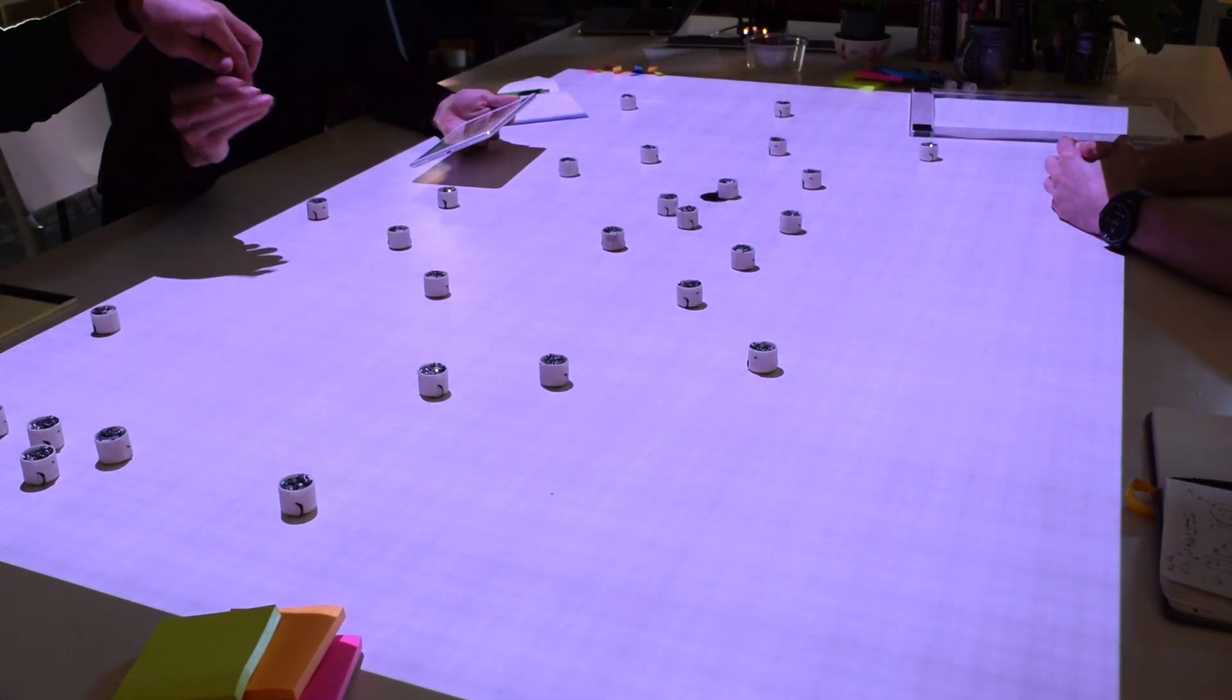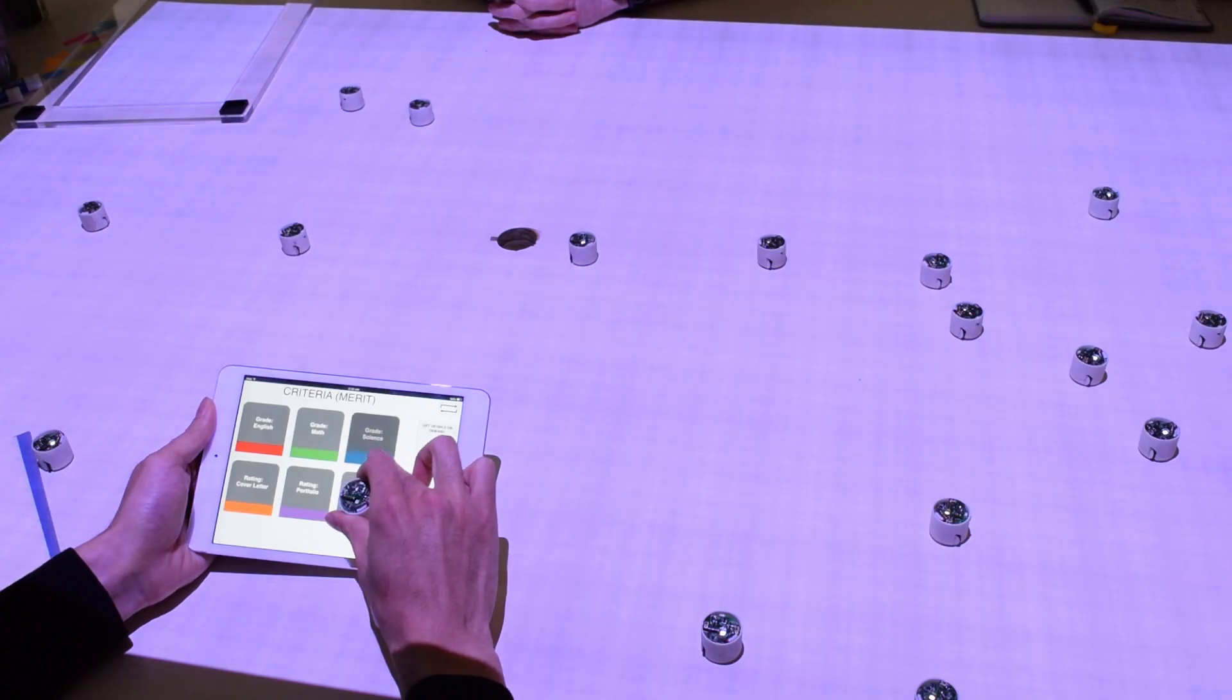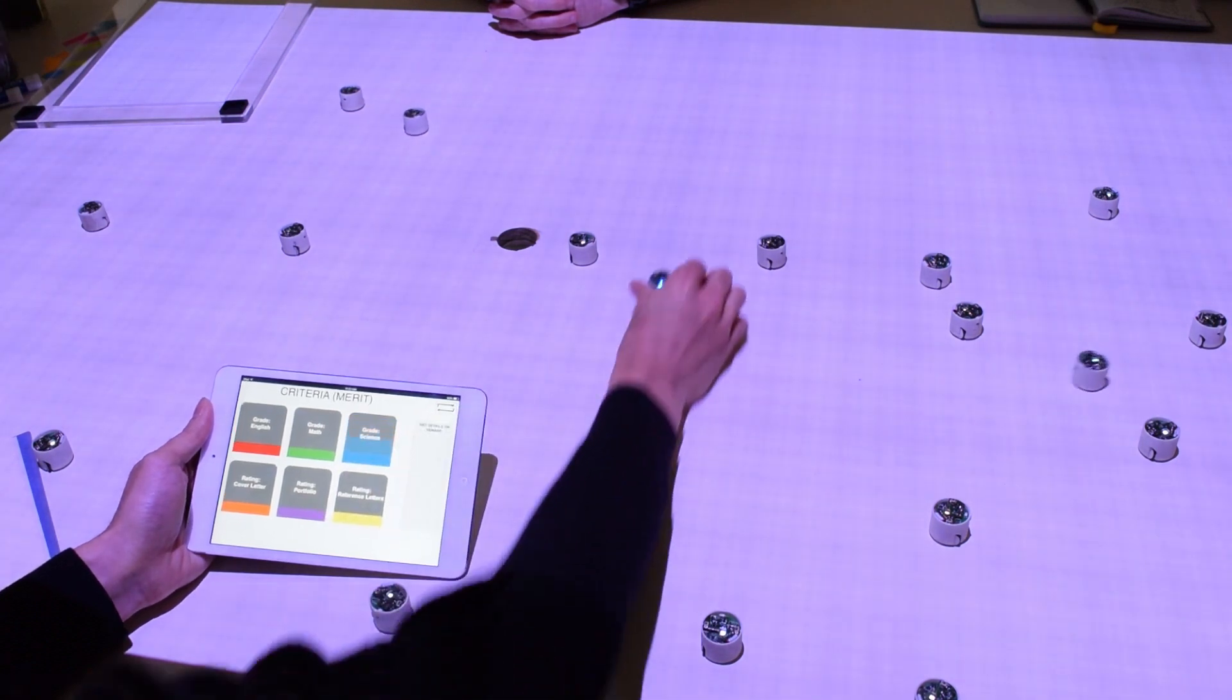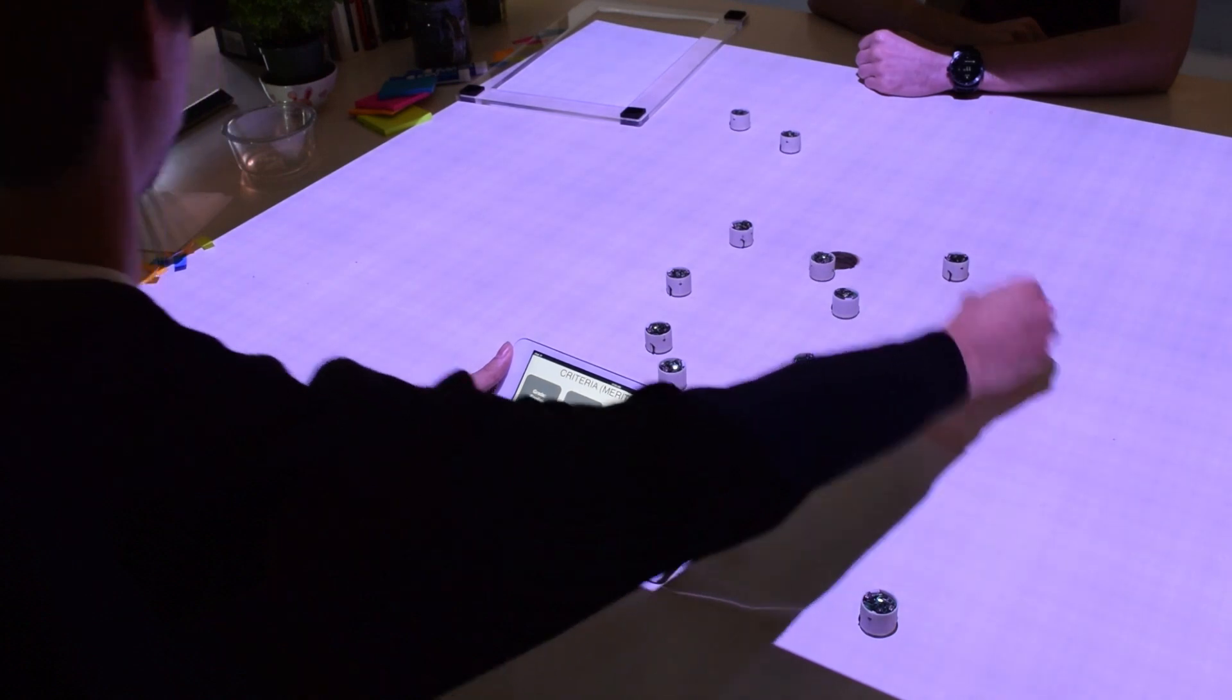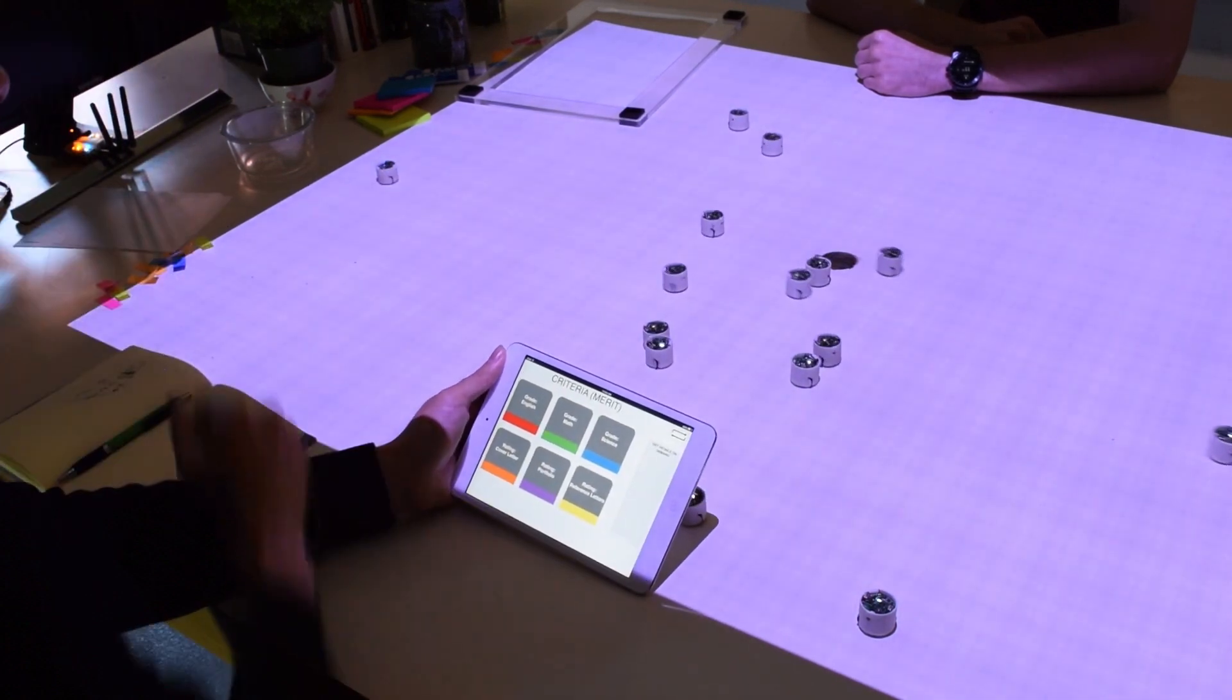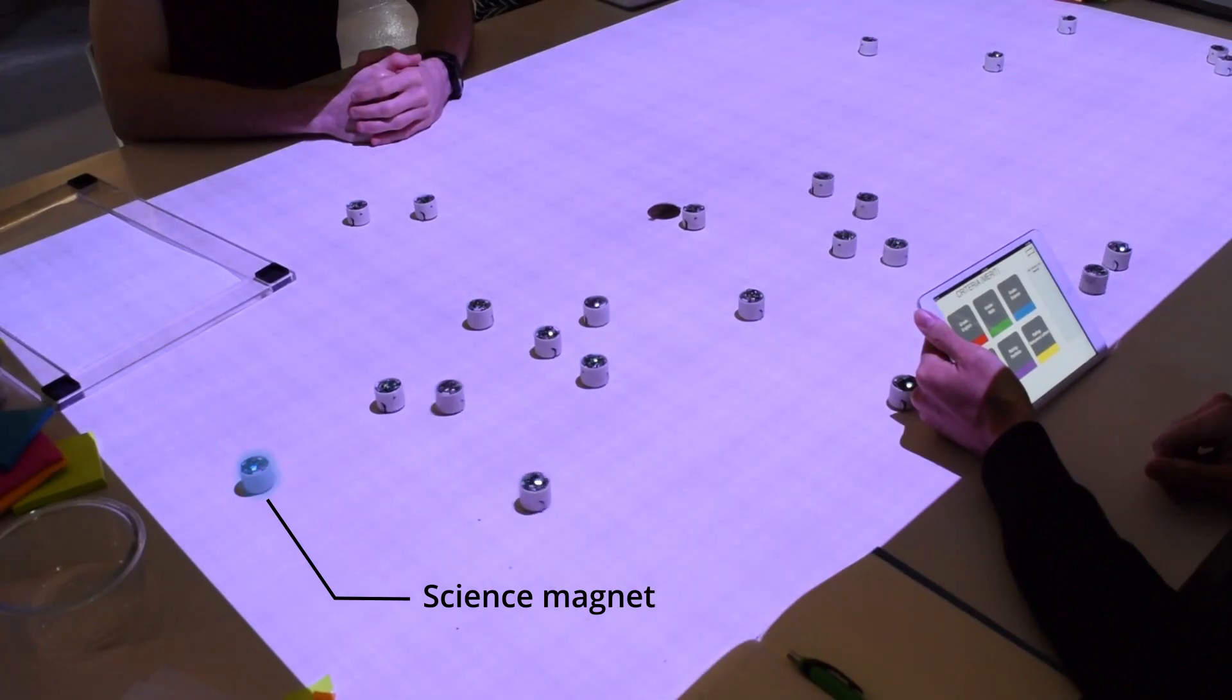The science professor takes the tablet and assigns the science grade to an unassigned Zoid. This creates a blue magnet that attracts the students based on their grades in science. The Zoids converge to the position corresponding to their grade.